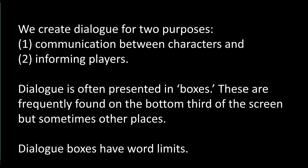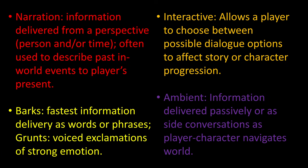Across the series, I've covered four different types of dialogue: narration, interactive, barks and grunts, and ambient. Each of these solves giving information to a player in a slightly different way. With narration, sometimes we can step outside of any particular character and give the player more direct information without it being within a certain character's perspective or knowledge. With that, though, we generally have a time perspective — we are describing past events, what happened in the history of this world, or what previously happened that the player needs to be informed of to make actions within the world.